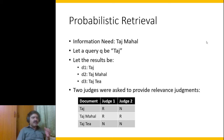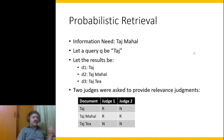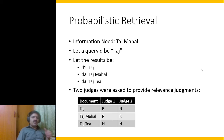Let's assume we have an information need which is 'Taj Mahal' and the query is assumed to be 'Taj'. We hired two judges to look at three results: Taj, Taj Mahal, and Taj D. Judge 1 claimed that Taj is relevant whereas Judge 2 claimed that Taj is not relevant, and similarly they provided several relevance judgments.